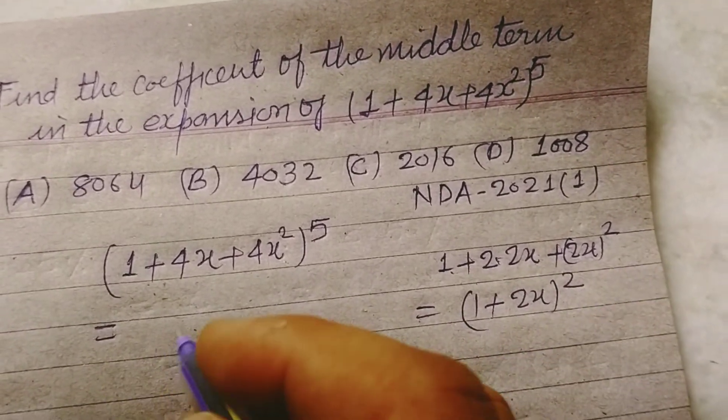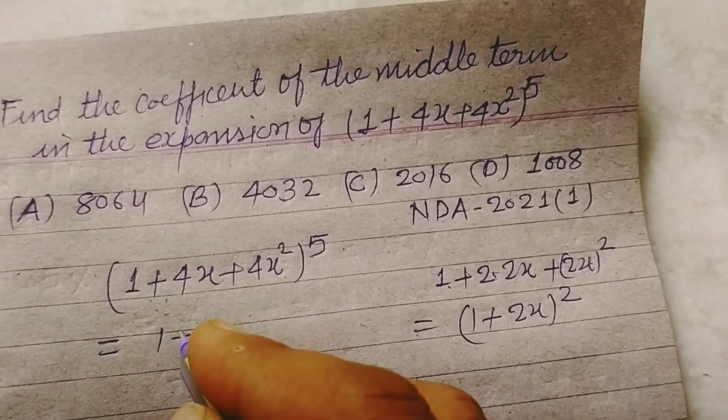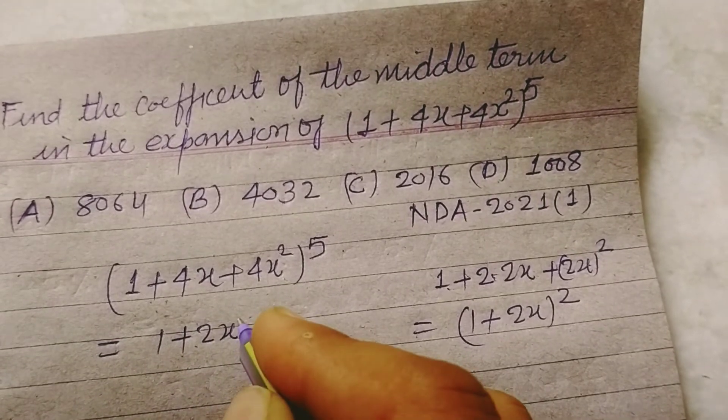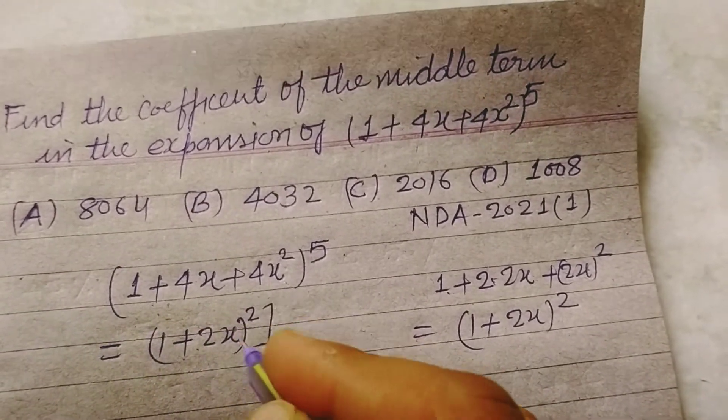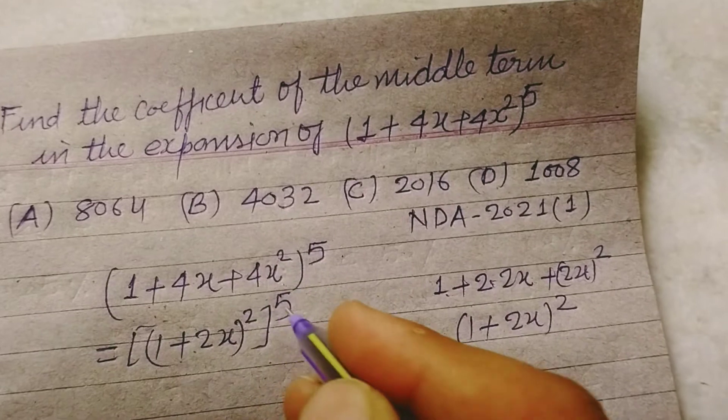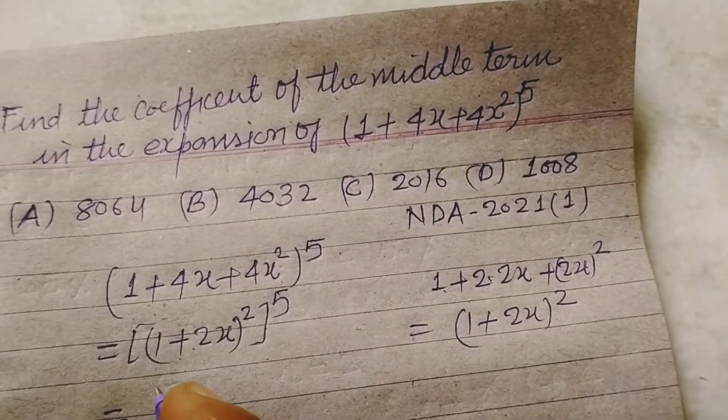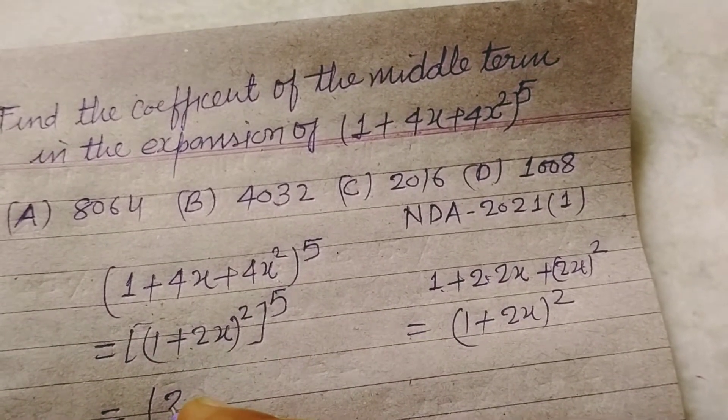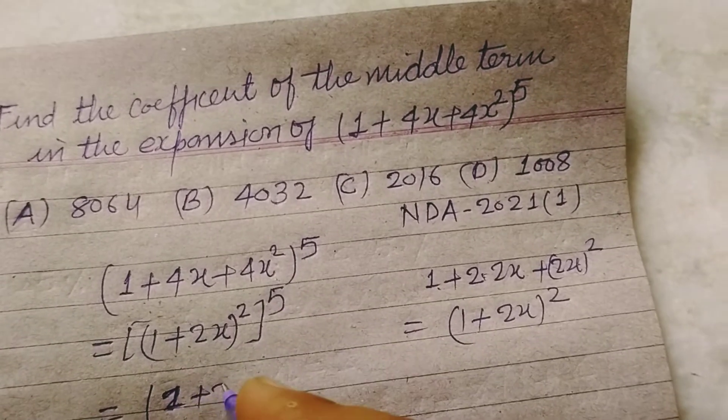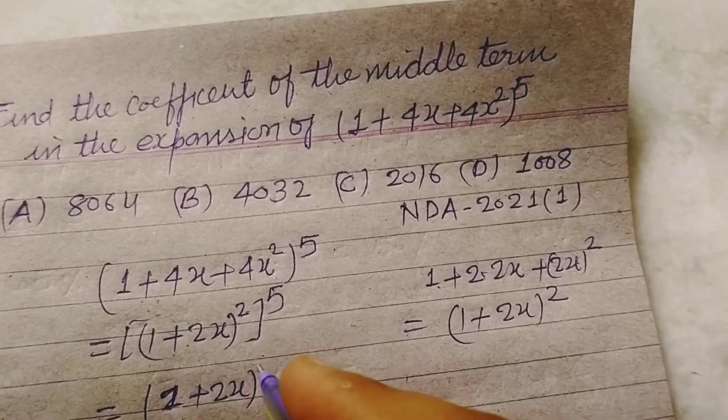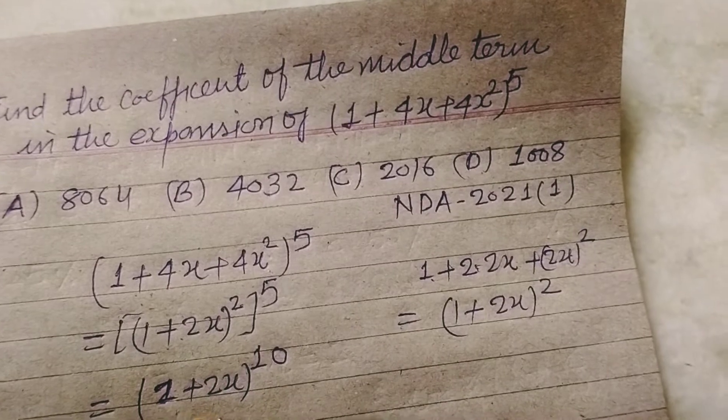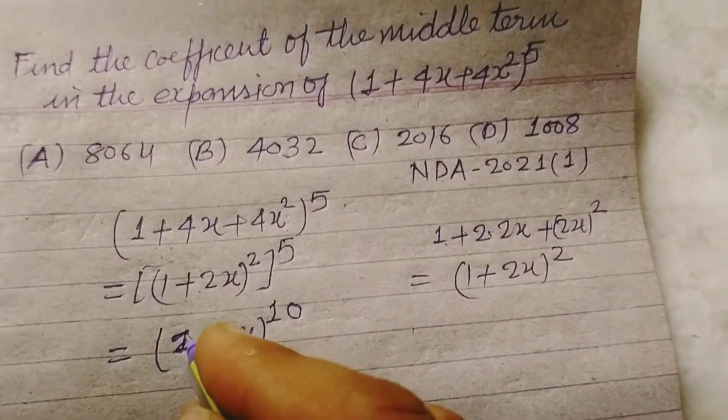So we write it as 1 plus 2x whole square to the power 5. Or it can be written as 1 plus 2x to the power 10. So this comes in the form of binomial theorem.